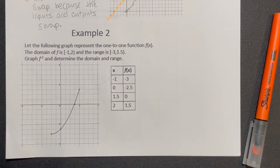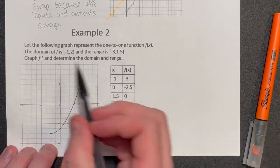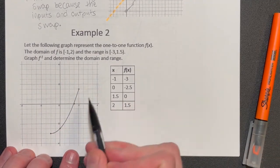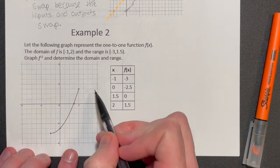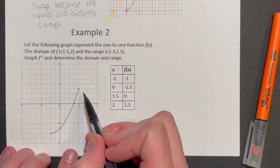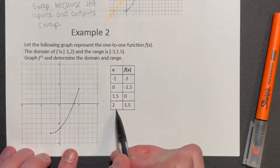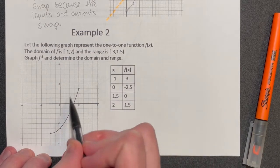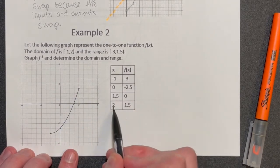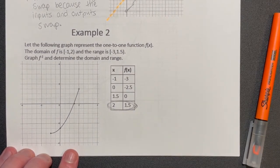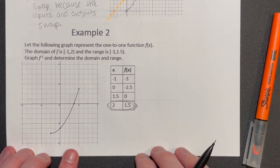In example two, a table has already been made for us. We want to graph the inverse and determine the domain and range. Notice that in this graph there is an open circle at the point (2, 1.5) — it is technically not defined — so we need to make sure that open circle is notated in our inverse graph as well.